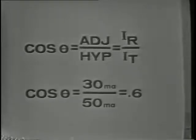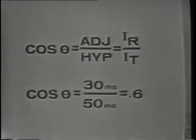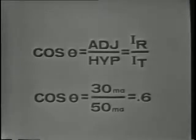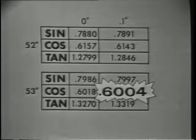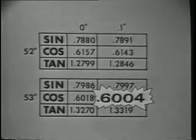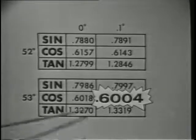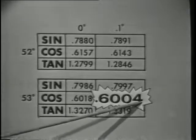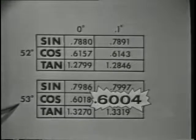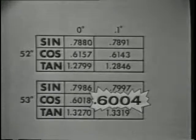When we solve for the sine, cosine, or tangent, we're finding the ratio of one side to the other, or one current to the other, which determines angle theta. If we take this number to the trig tables, the angle may be found.